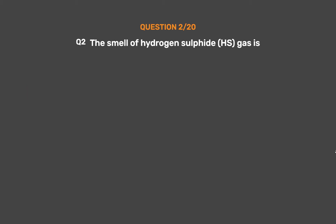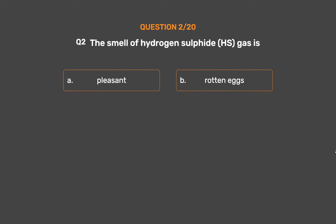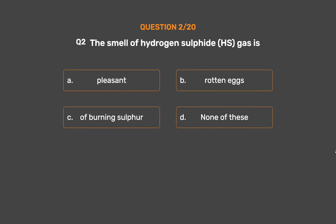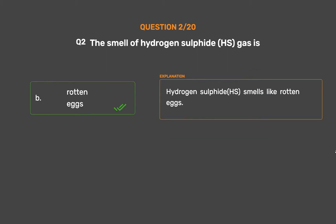Question number 2. The smell of hydrogen sulfide (H₂S) gas is? Option A: Pleasant. Option B: Rotten eggs. Option C: Of burning sulfur. Option D: None of these. The correct answer is Option B: Rotten eggs. Hydrogen sulfide (H₂S) smells like rotten eggs.